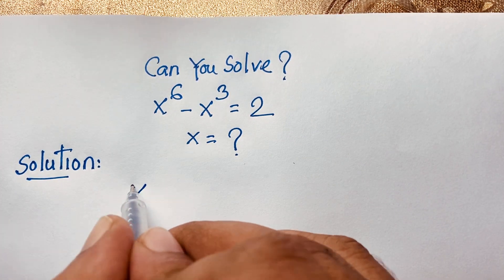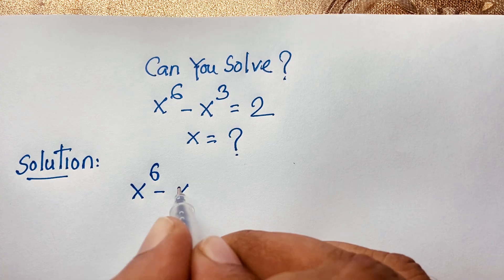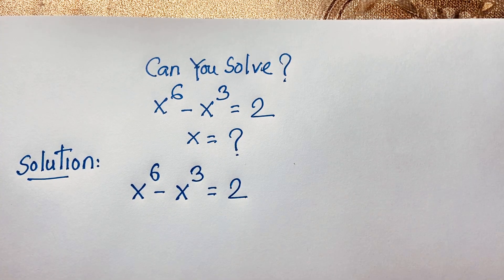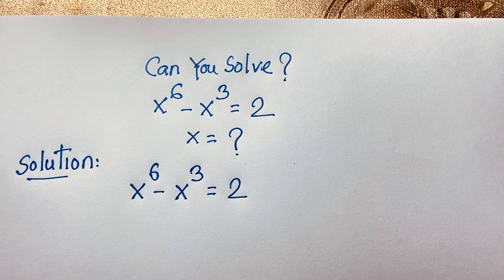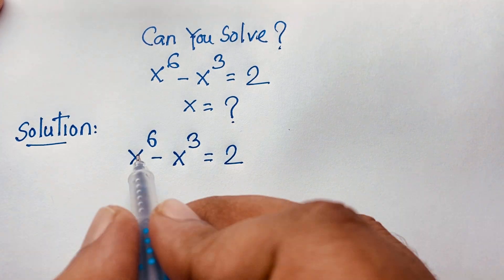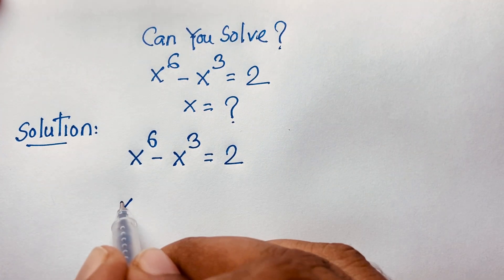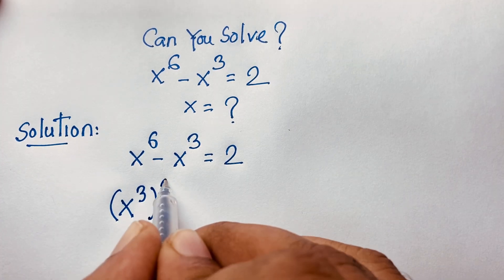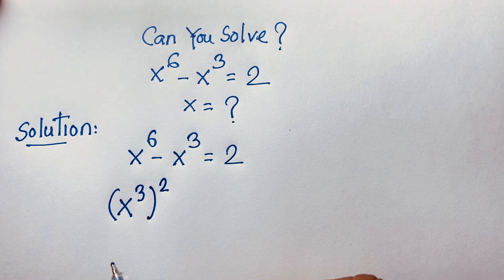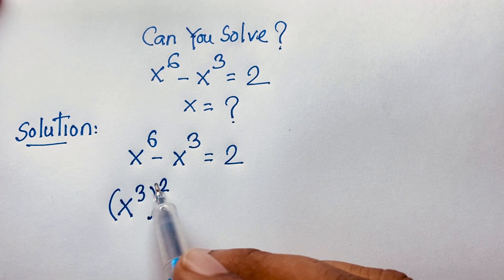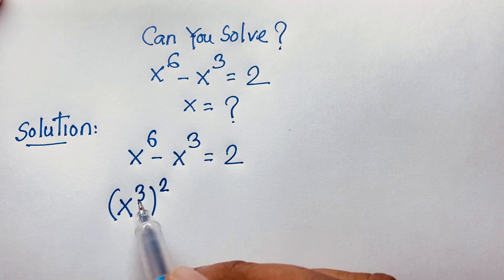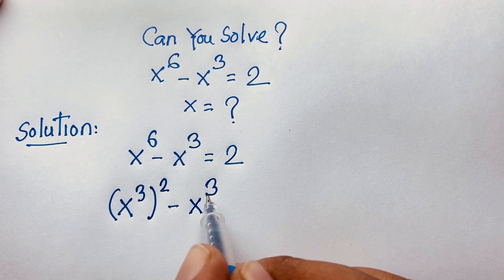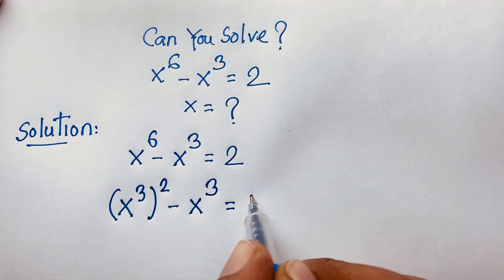Our question is x to the power 6 minus x to the power 3 is equal to 2. Now, this x to the power 6, I can say it will be x to the power 3, whole to the power 2. According to exponential law, 3 times 2 gives 6. So this 6 is 3 times 2. And here, x to the power 3 is equal to 2.